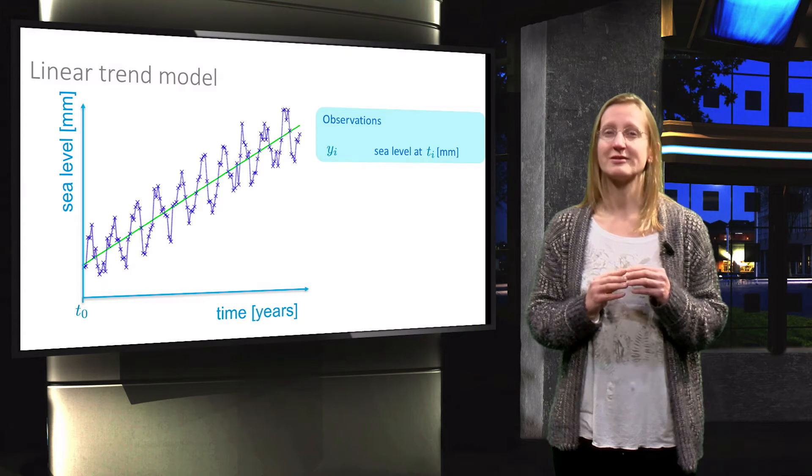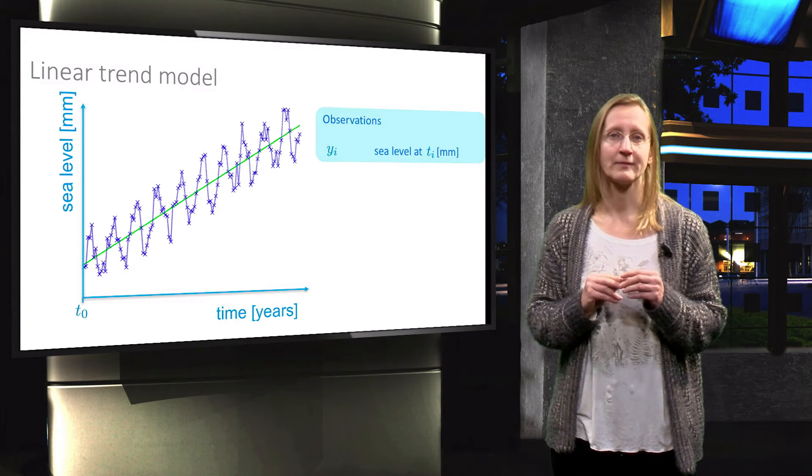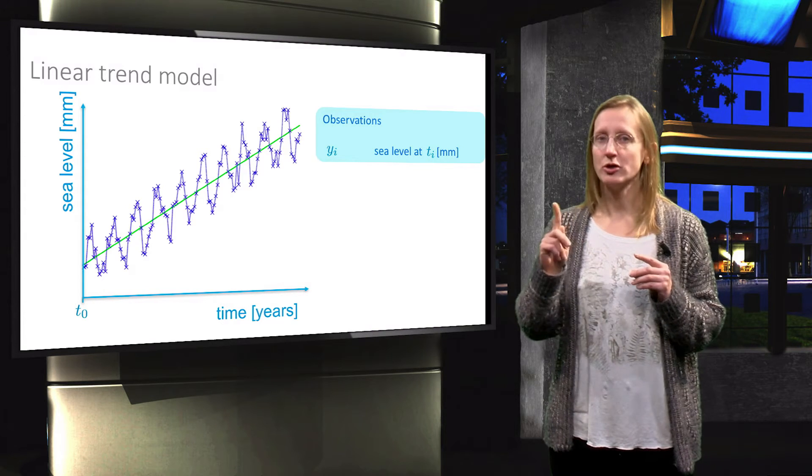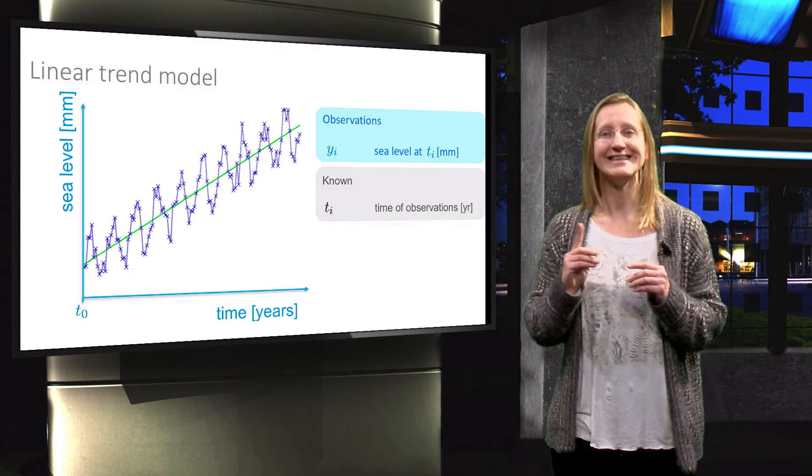Obviously, the observations are the tide gauge measurements, which are taken once a month. The times at which these observations are taken are treated as known, and therefore deterministic parameters and they are expressed in years.